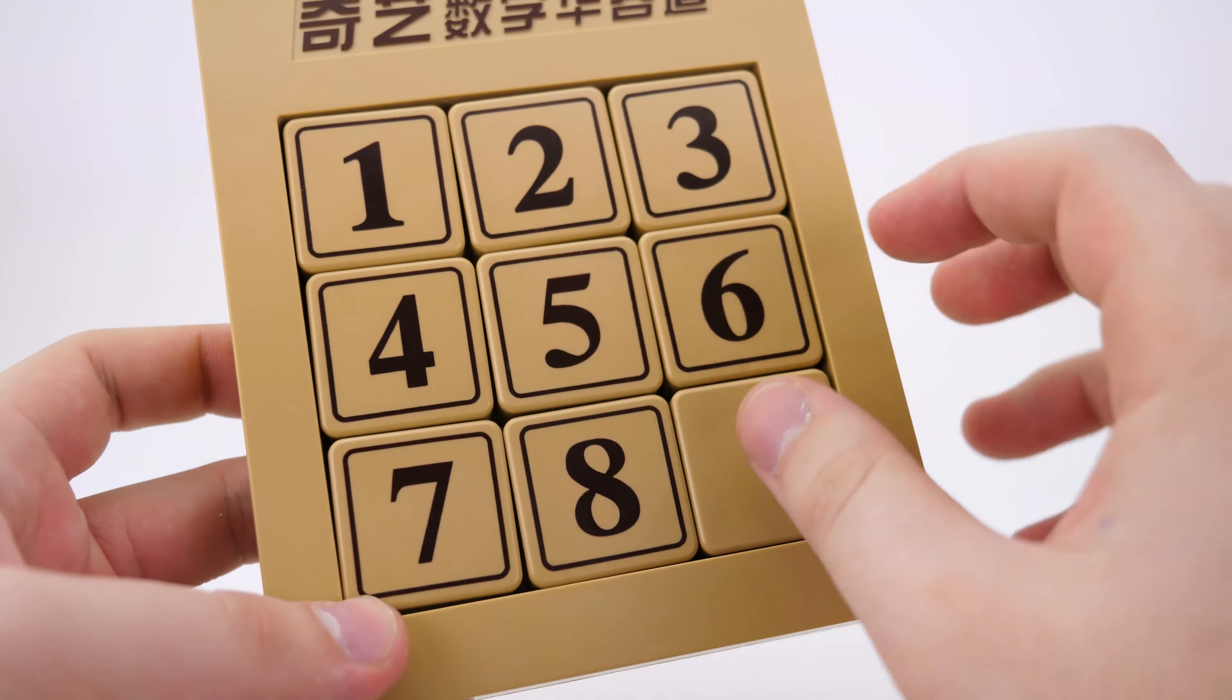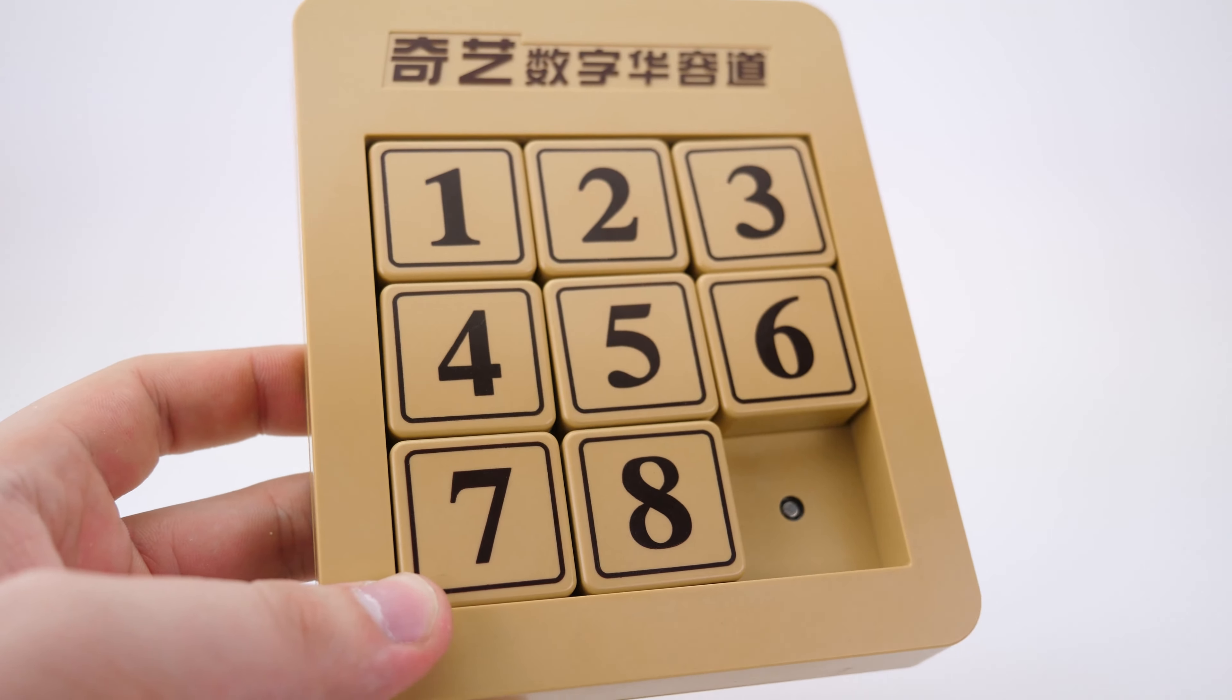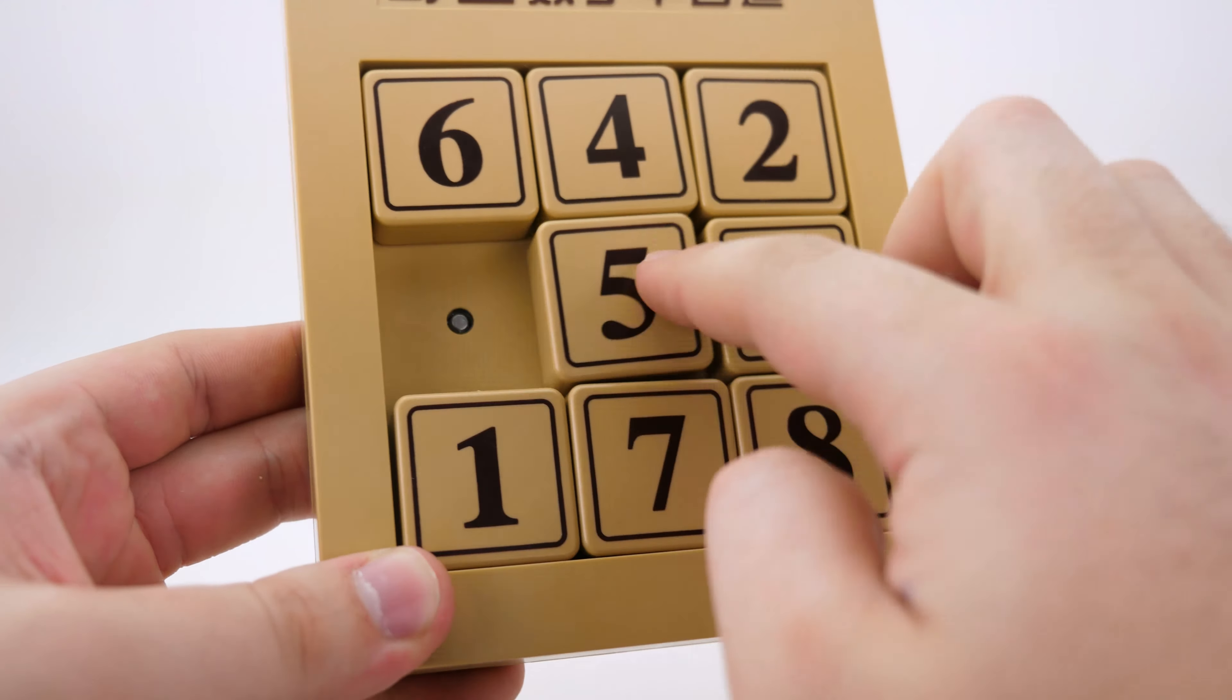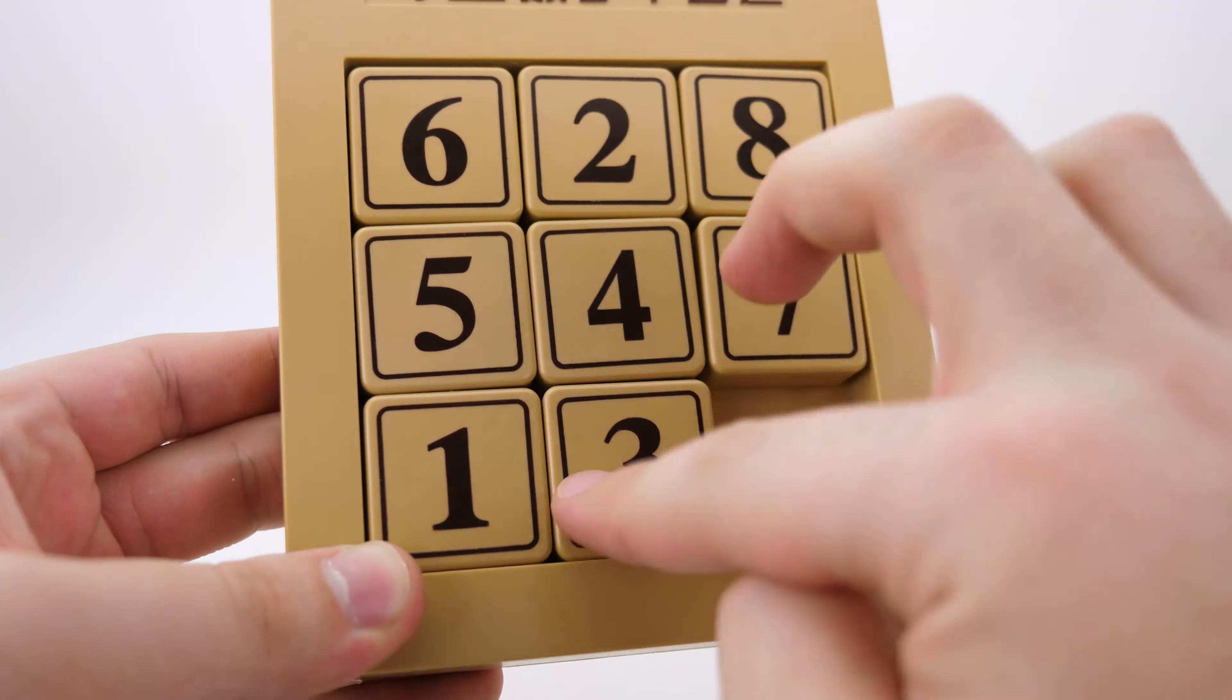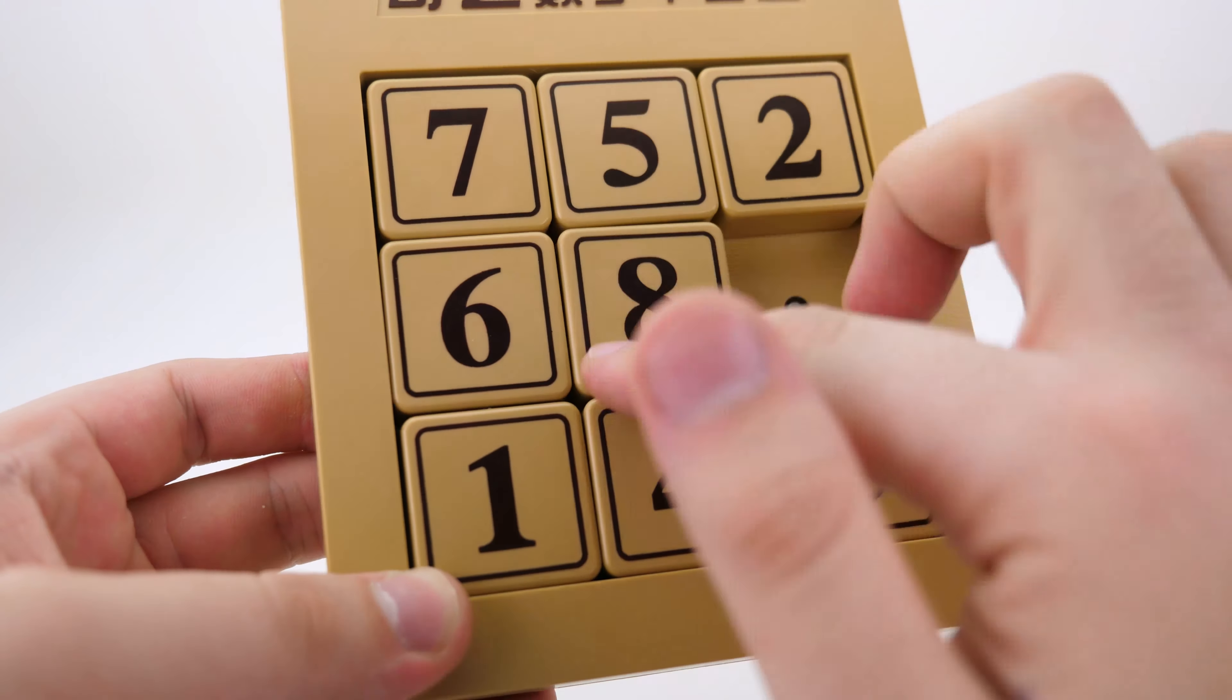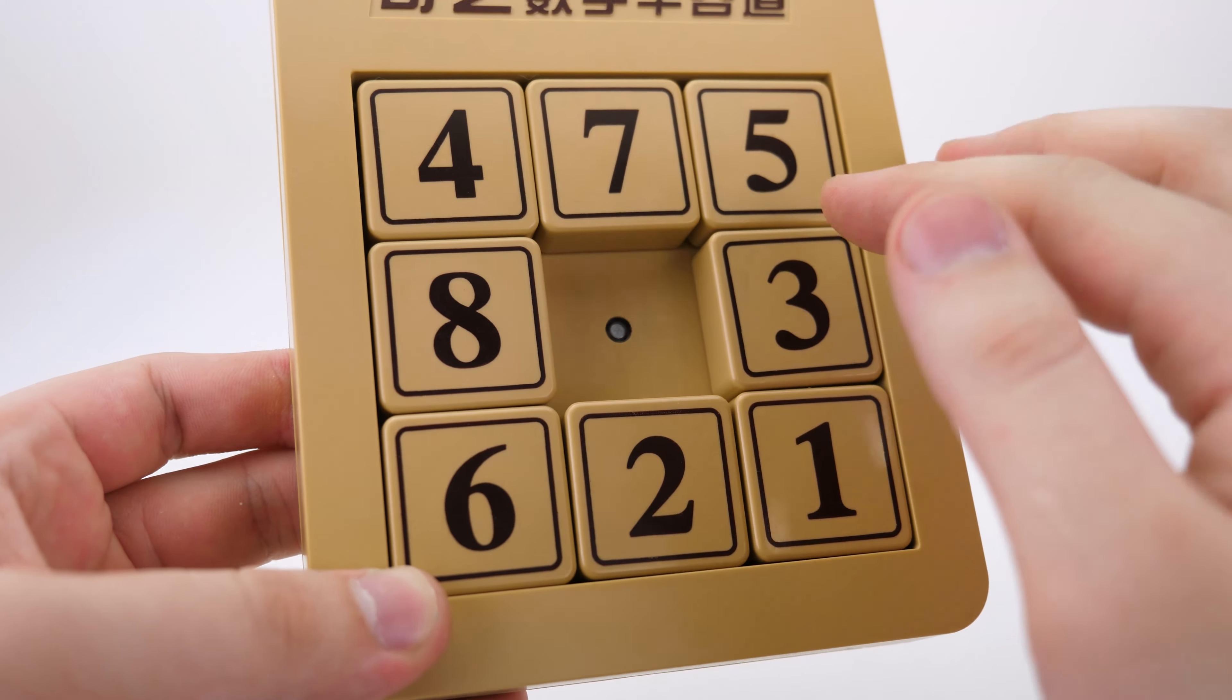And then here we have the puzzle itself. Now I'm not sure if I can maybe solve it or even scramble it from this camera angle, because you're meant to really use it on a flat table, but let's give it a shot. They are held in with magnets and yeah, this feels really good. Apparently this is lubricated, which yeah, it does feel a little bit lubricated in there, which is meant to help with the longevity of the puzzle. And on top of that, just makes it move better.